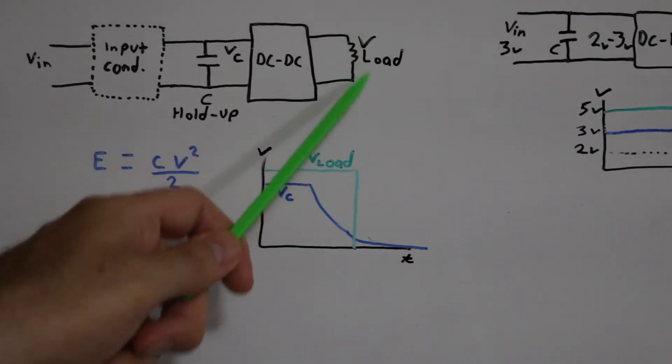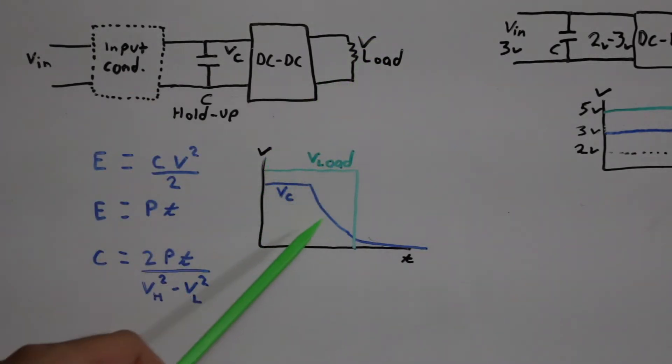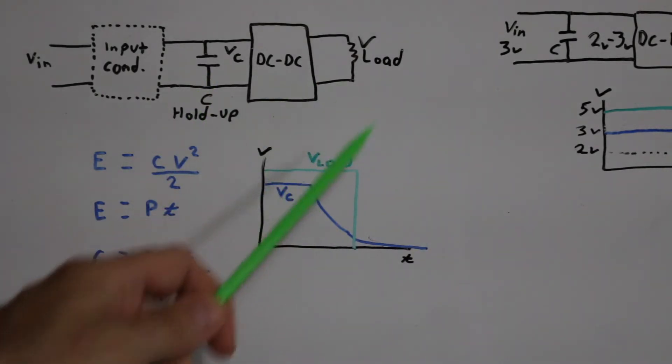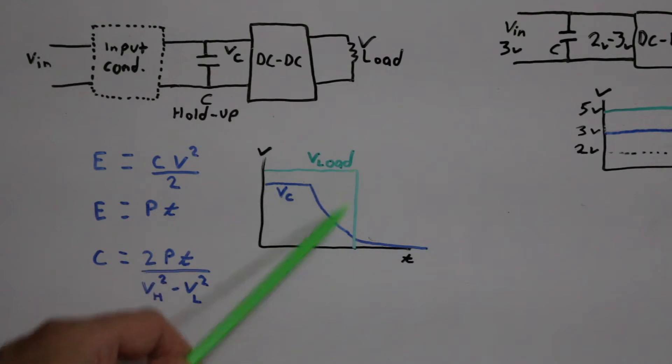And while it's doing so, the voltage on the load is going to just stay uninterrupted until the capacitor voltage is so low it can't power the circuit, and then the output finally drops.